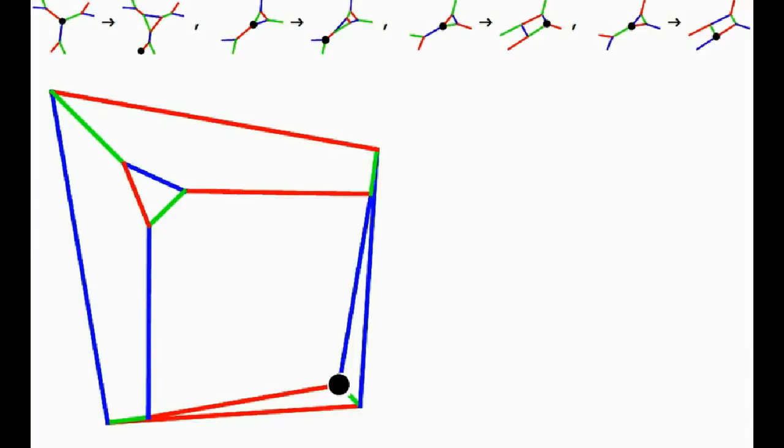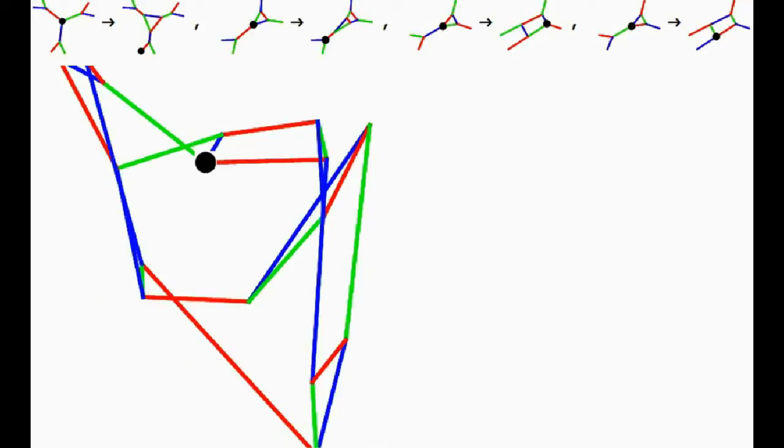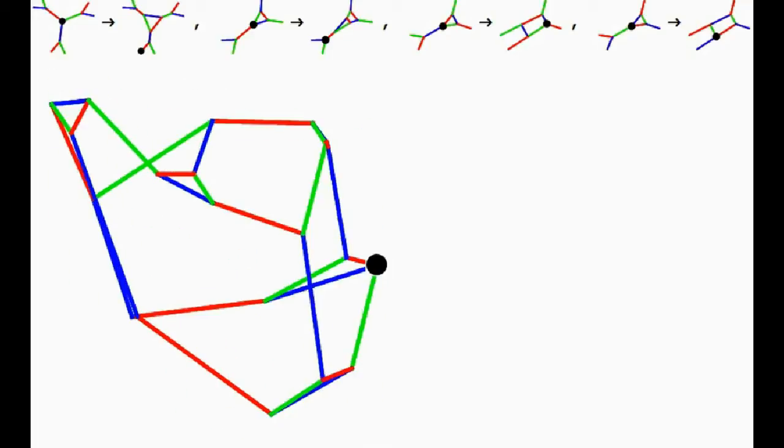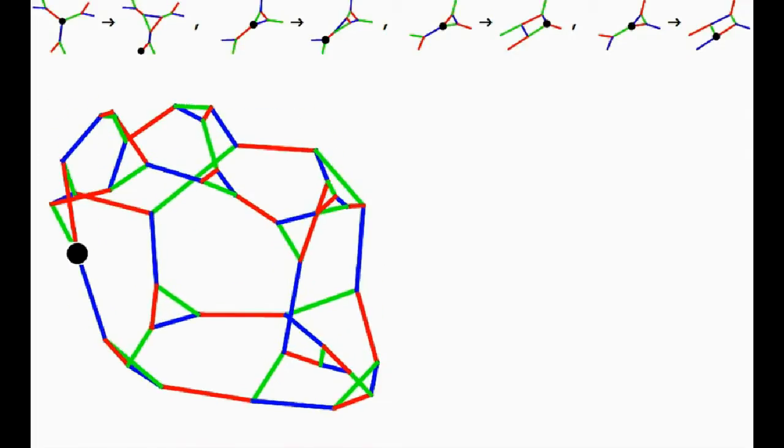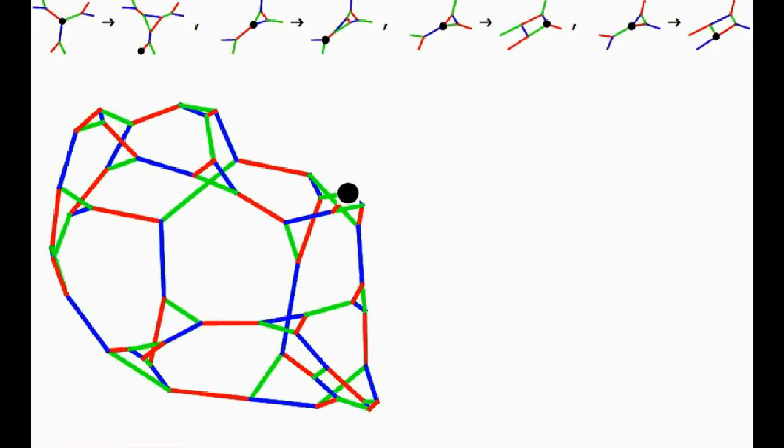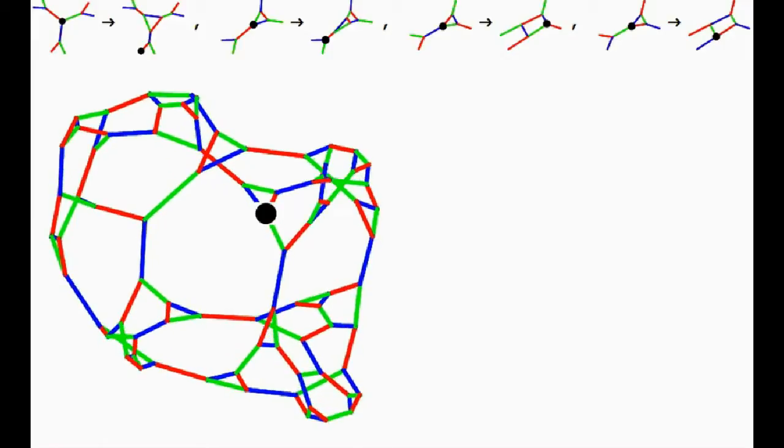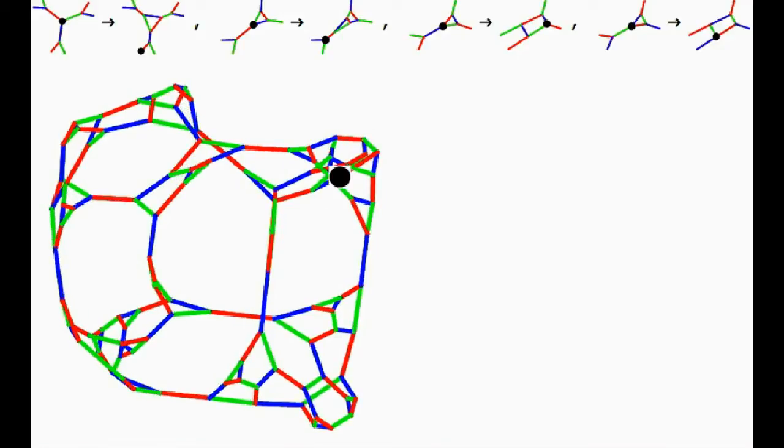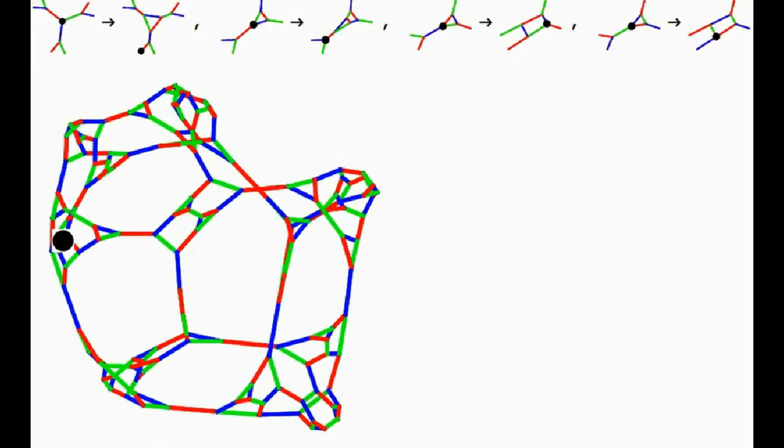The network was generated by starting with a cube and then using these four little rewrite operations shown at the top here. Essentially what happens is that we have this writer, which is signified by a black vertex. On any time step, the writer looks at its surroundings and then it applies one of these four different rewrite rules shown at the top, depending on its surroundings.